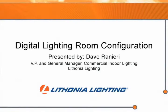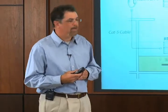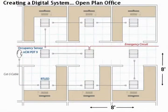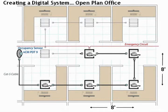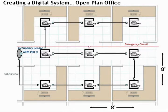How does a digital network enable a more cost effective and simplified control solution? This is an example of a typical open plan office with luminaires on 8x8 centers. In this particular case, the entire room is controlled by a single occupancy sensor.